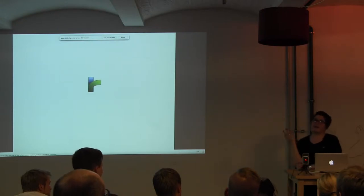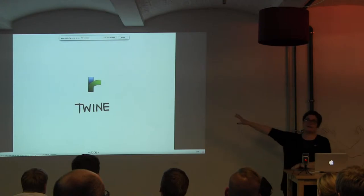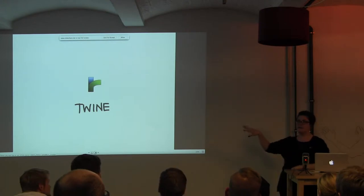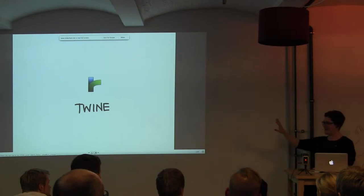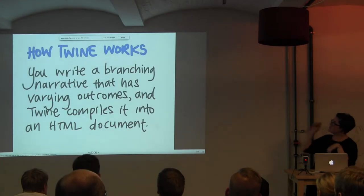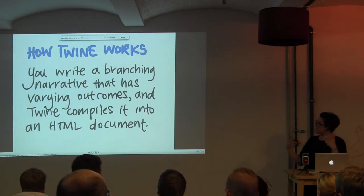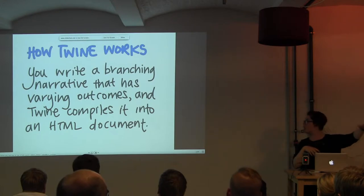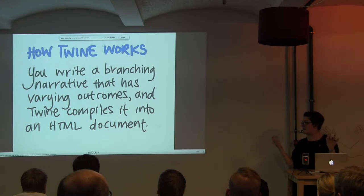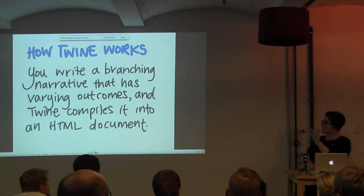This is kind of where Twine comes in, because Twine is a really easy way to make a game. It's for storytelling — you write this branching story with varying outcomes, little offshoots, and then it compiles into an HTML document, which is super easy to publish on the web. It requires almost no programming — a six-year-old can do it — and it gives you something that is playable on a million platforms.